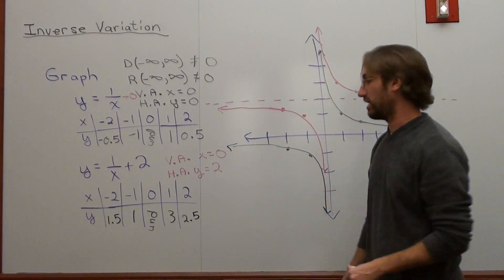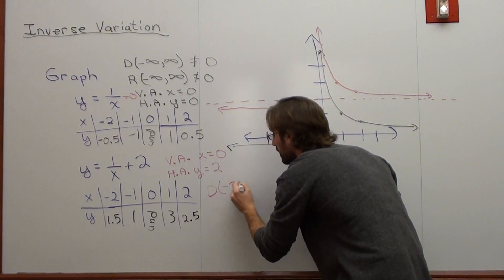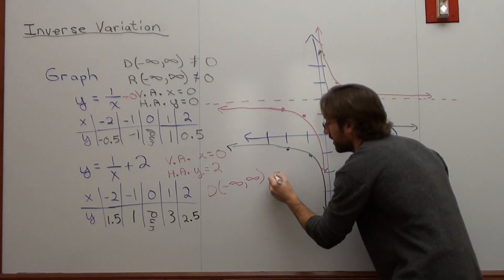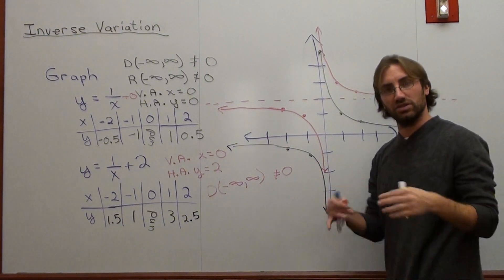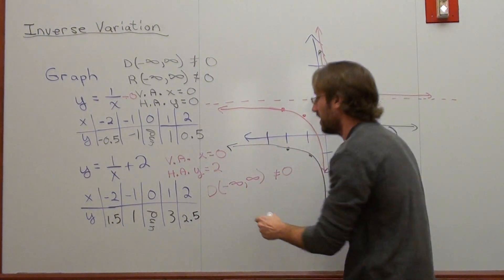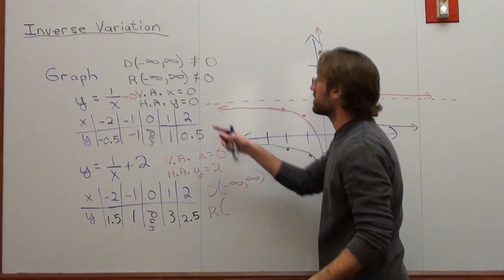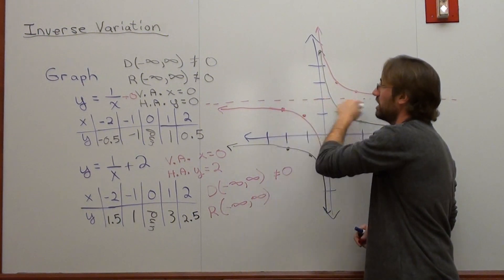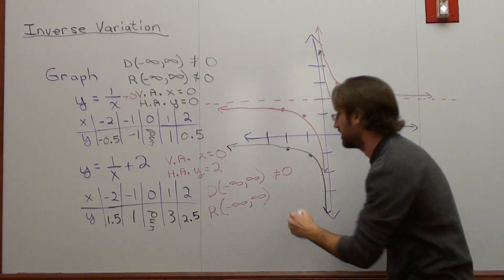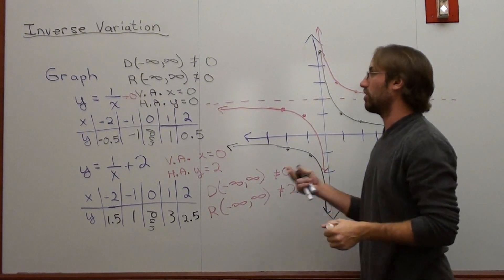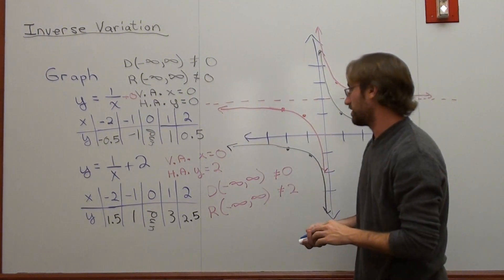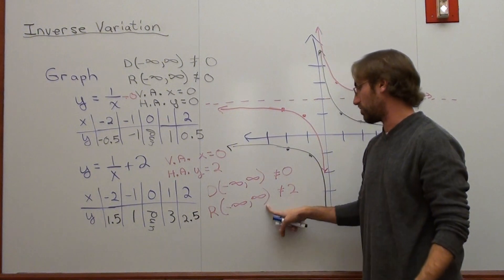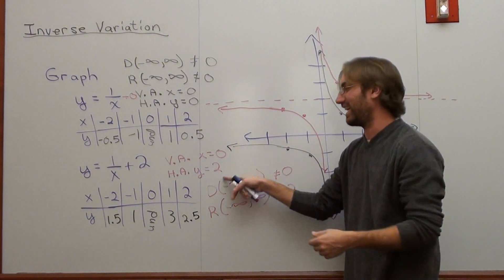The domain and range, very fascinating. Go from negative infinity to infinity, except you can't include this value here. So it's not equal to 0, but everything from negative infinity to infinity otherwise. The range is the same as the first one, negative infinity to infinity, except you can't include your horizontal asymptote. It never actually touches 2. The graph never goes through this 2, so it doesn't include 2. And like I said, if you just want to see what your domain and range are for inverse variation, just look at your horizontal asymptote and your vertical asymptote and don't include that. Vertical asymptote goes with the domain. Horizontal asymptote goes with the range.